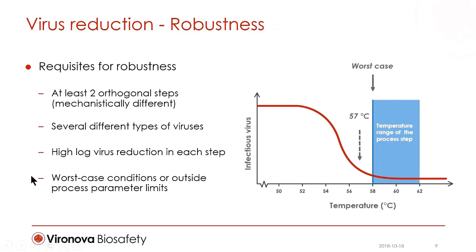To obtain a robust overall virus reduction, at least two mechanistically different virus-reducing steps should be tested. Each step should be tested with several different types of viruses. A virus reduction of at least four logs should be obtained in two or more steps. The testing should be done at the process parameter limit where virus survival is most likely. If a temperature span of 58 to 62 degrees is allowed, the testing should be performed at 58 degrees. This is called worst-case conditions.